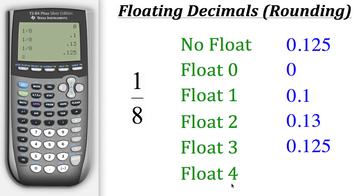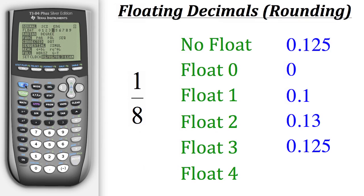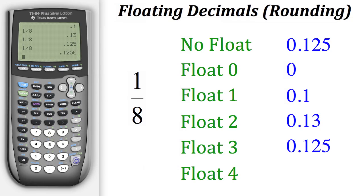Let's change our float settings one more time. For this last operation, let's set float to four. We'll go to mode, go over to float, and hit enter on four. Now when we do one divided by eight, it gives us four decimal places, resulting in 0.1250.